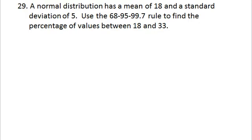A normal distribution has a mean of 18 and a standard deviation of 5. Use the 68-95-99.7 rule to find the percentage of values between 18 and 33.